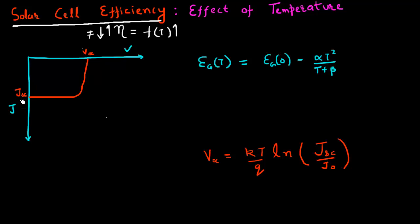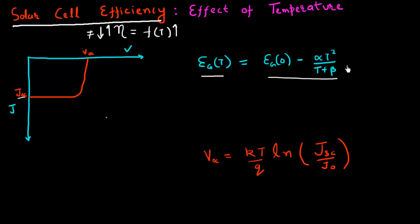Short circuit current essentially depends upon the number of carriers which are collected above the band gap. So JSC would be primarily influenced by how my band gap changes as a function of temperature. The band gap is given as a function of temperature by a specific formula, and when you increase the temperature, the band gap typically reduces in value.